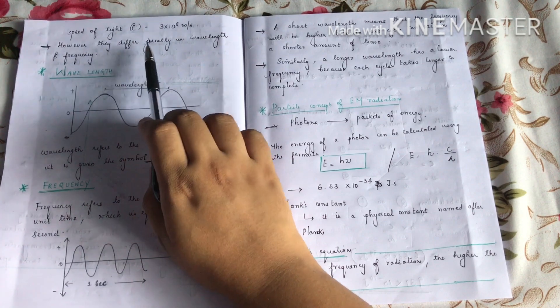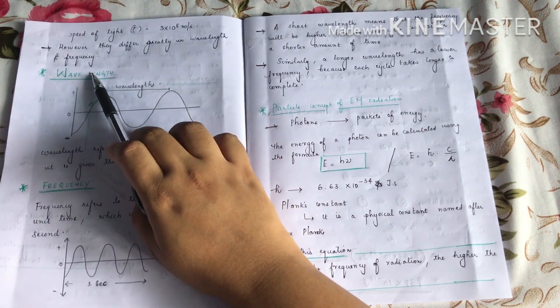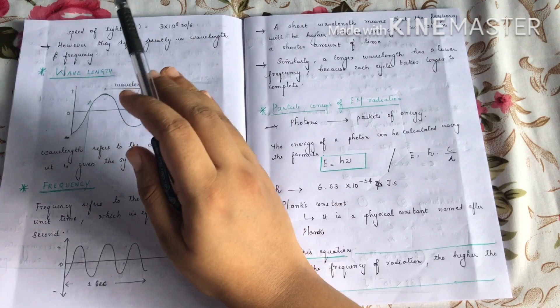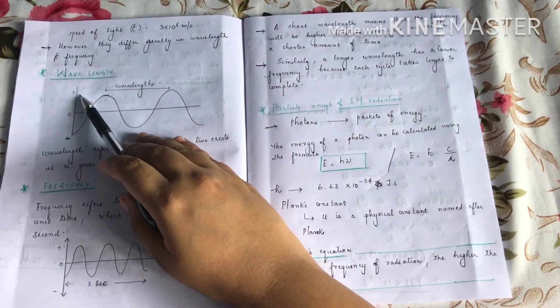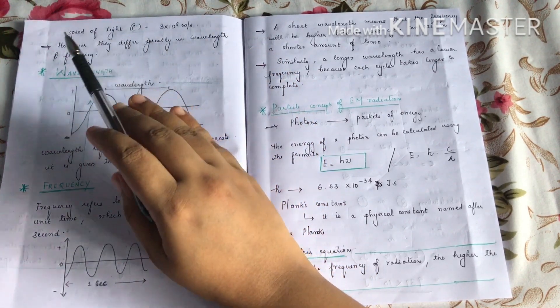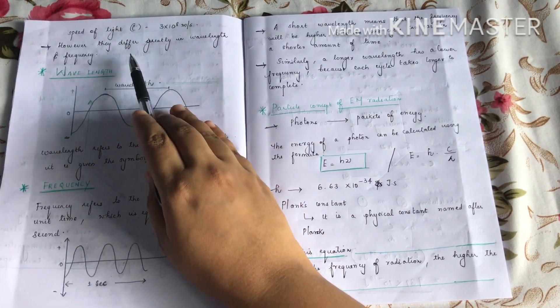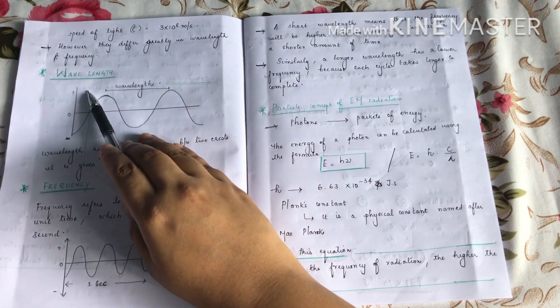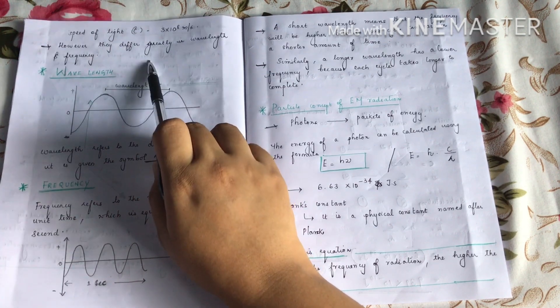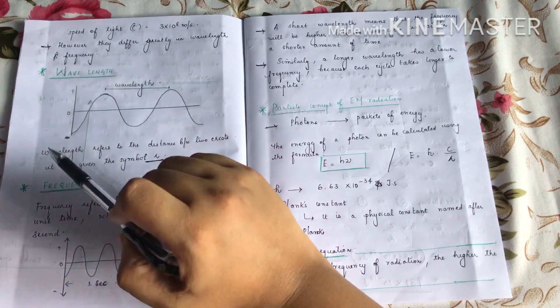However, they differ greatly in wavelength and frequency. These perpendicular electric and magnetic fields are moving with the same velocity in free space for all electromagnetic radiation. The difference is in wavelength and frequency.